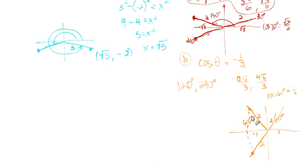That's everything — reference angles and looking at sine, cosine, and tangent in terms of an x, y coordinate. We're going to take that and make it very useful in section 4.2, where we develop something called the unit circle. The unit circle is a great reference for those common angles — 30, 45, 60, 90, and 270 and their multiples. It makes it fairly easy to memorize all those values, which we'll use constantly throughout calculus and beyond. It'll be worth your time to memorize that. Thanks for watching.